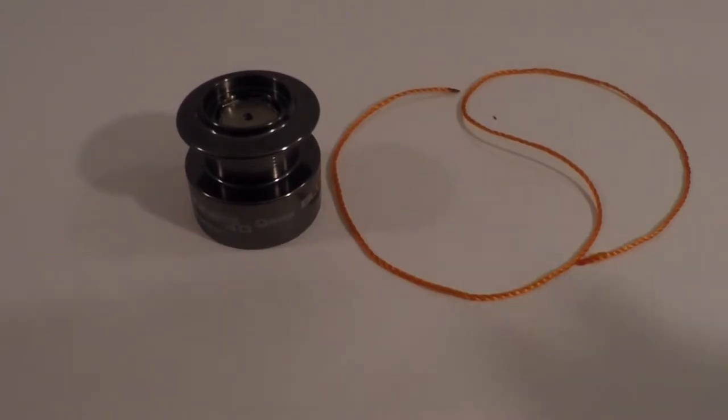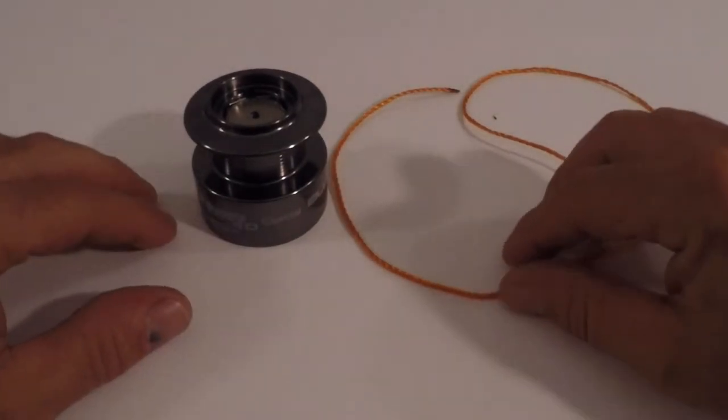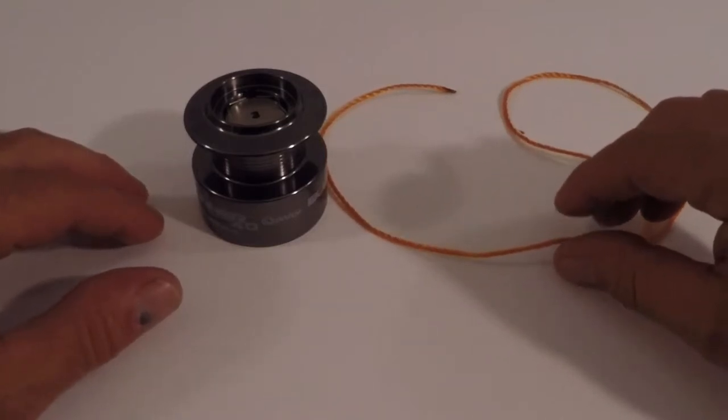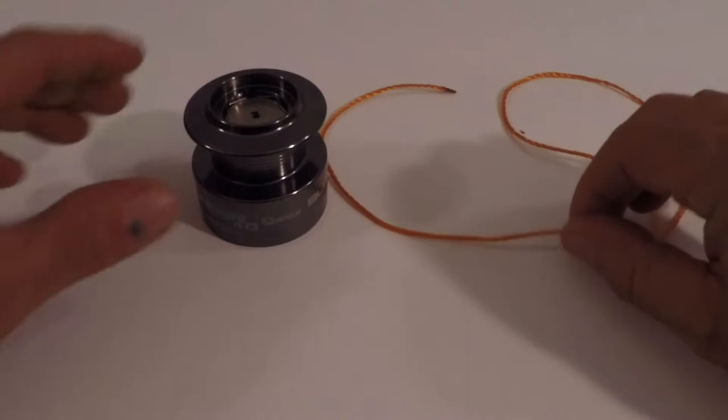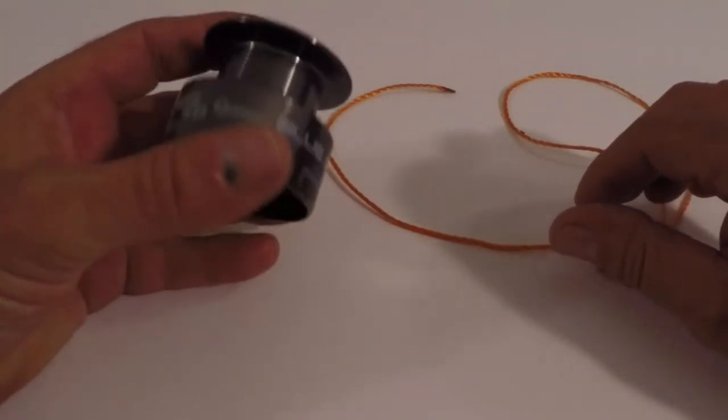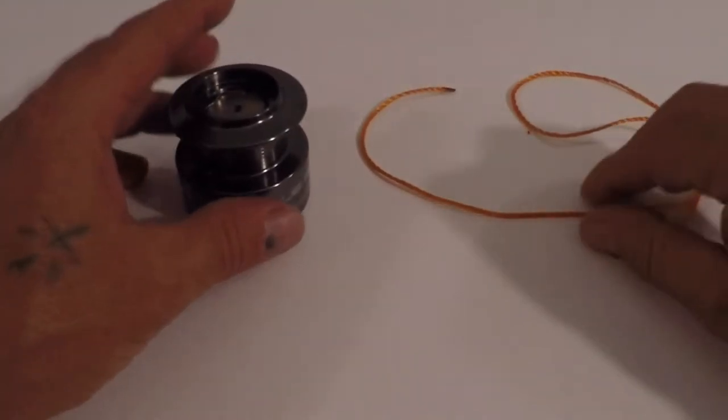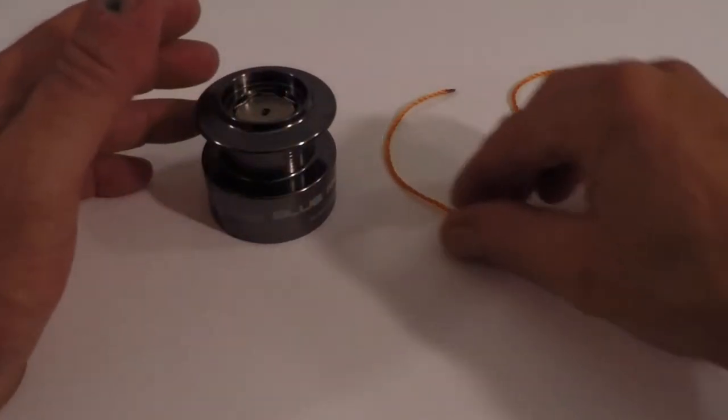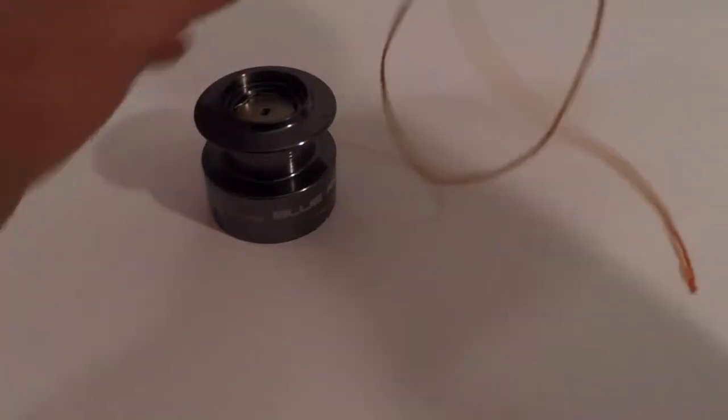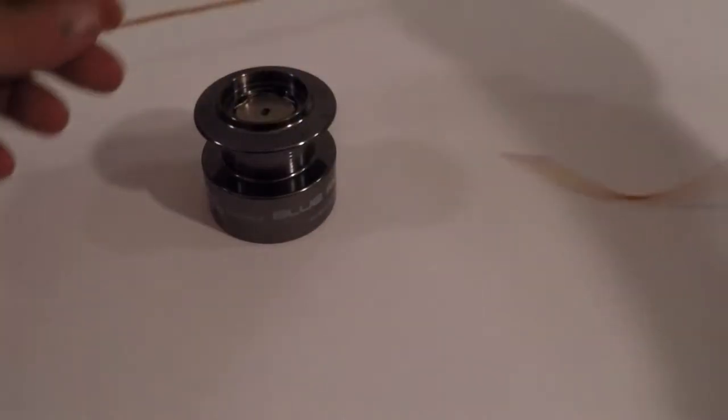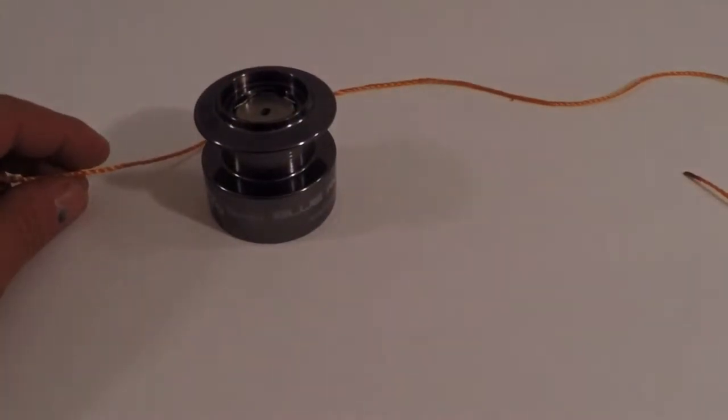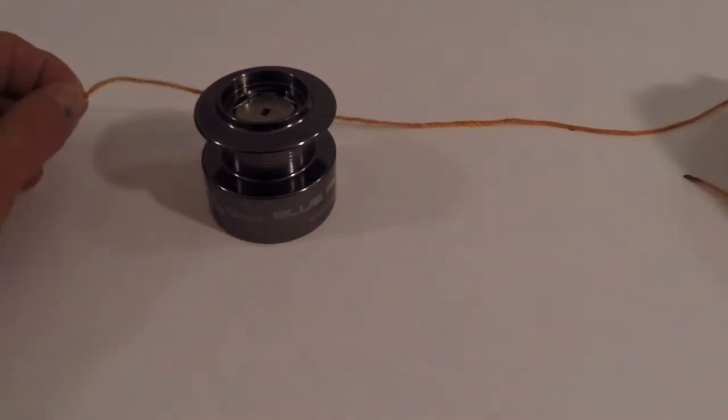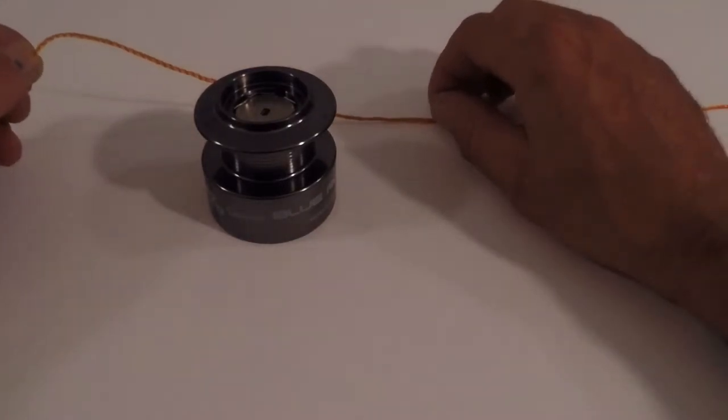So without further ado, we're gonna get into our knot video. This knot's called the arbor knot and as you can tell I got the spool here out of the reel. So it's basically a great knot for tying your line whether it's braid or mono to your spool.